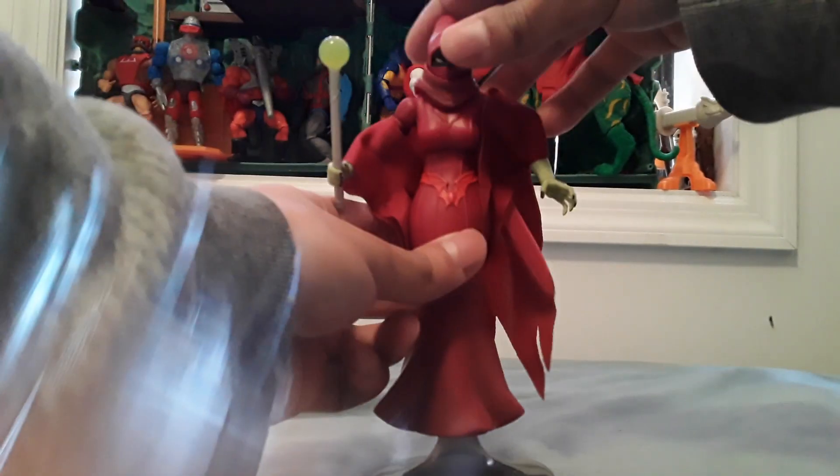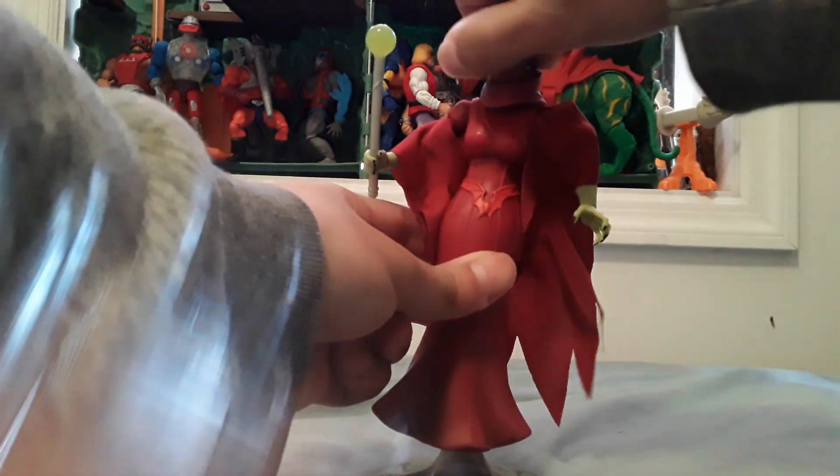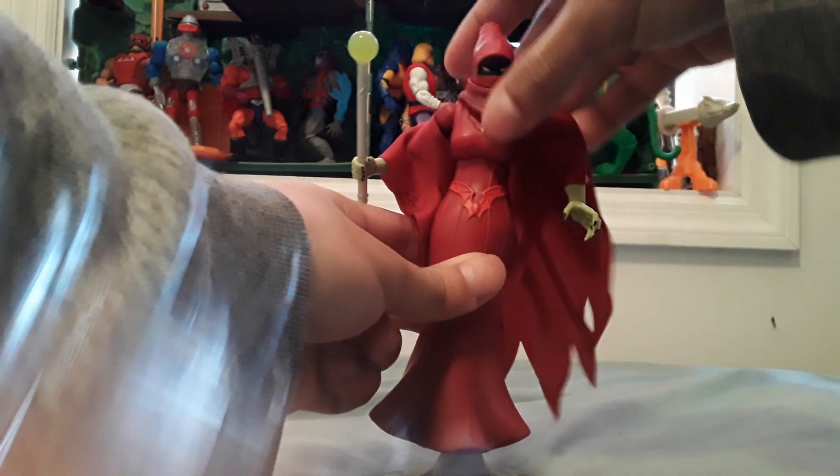This is Shadow Weaver with her articulated head that goes left and right, up and down, forwards and backwards.